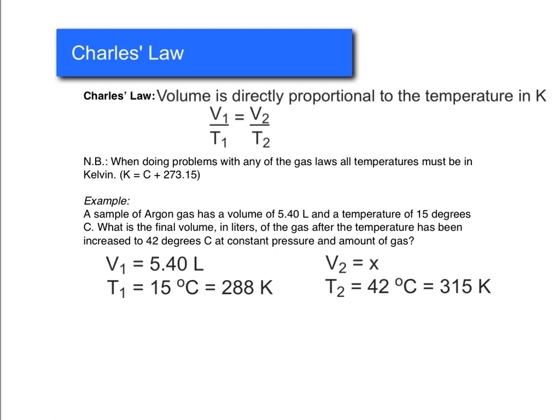Alright, so if we plug that into our equation, we have 5.4 over 288 is equal to X over 315. Alright, and if we divide 5.4 by 288, that gives us 0.01875. Divided by 315 gives us X is 5.9 liters. Alright, and you always want to go back and make sure these numbers make sense based on what you know about the gas law. So if our temperature goes up, we know that based on Charles' law, the two are directly proportional. So if our temperature is going up, our volume also has to go up, and it does. It goes up by just a little bit, about a half a liter.